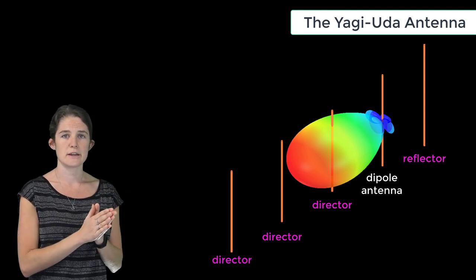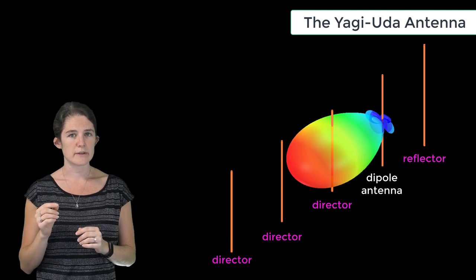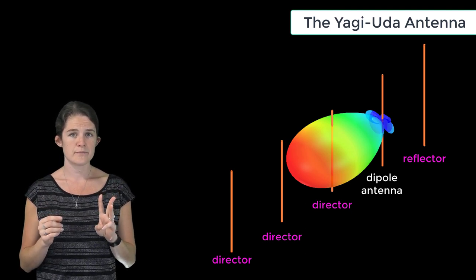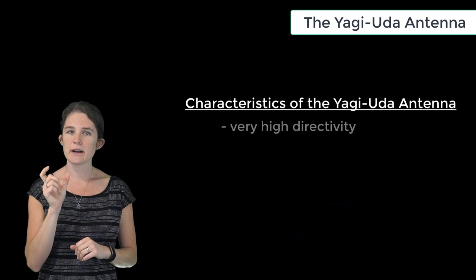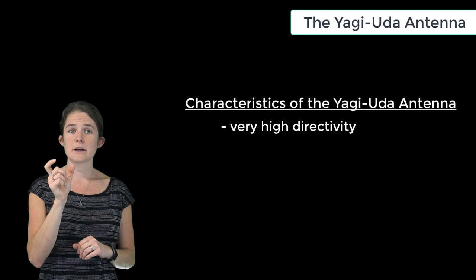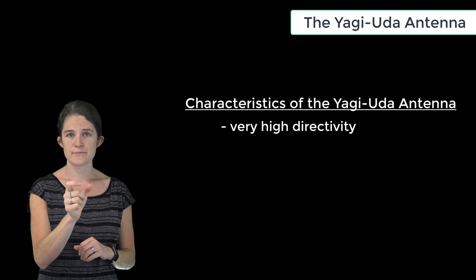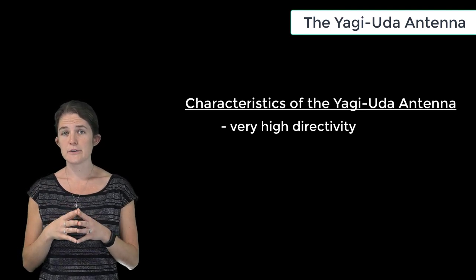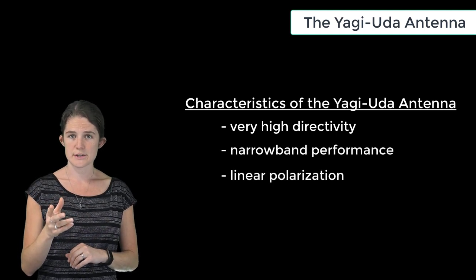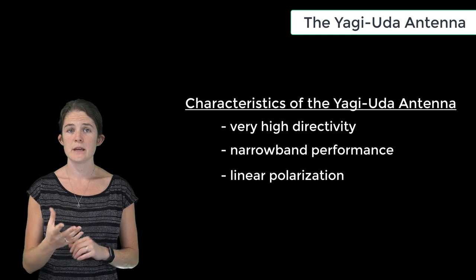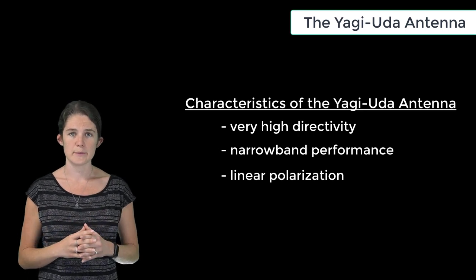This is a typical Yagi-Uda design, with a single reflector and three directors. So unlike a typical dipole antenna, the Yagi-Uda antenna offers a very high directivity and a very focused radiation pattern. Like dipoles, Yagi-Uda antennas are narrowband and radiate with linear polarization. The electric field of the radiated wave is oriented in alignment with the dipole.